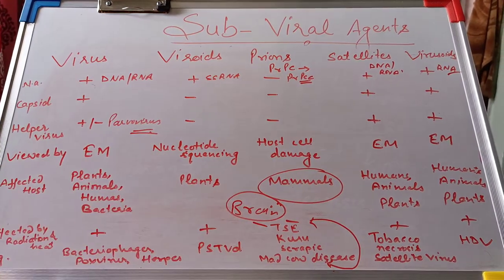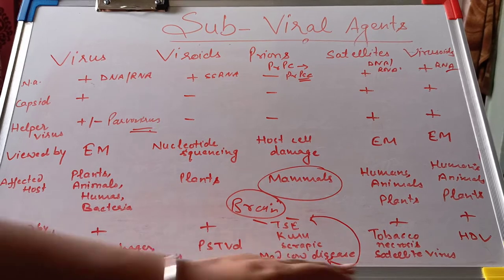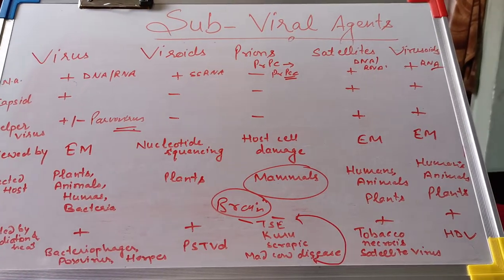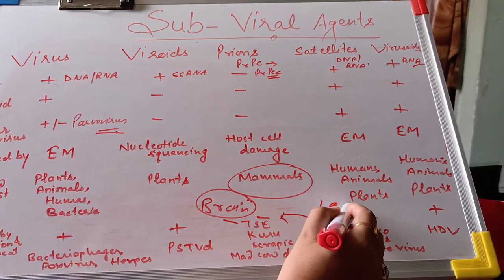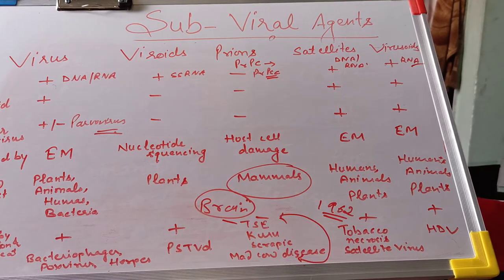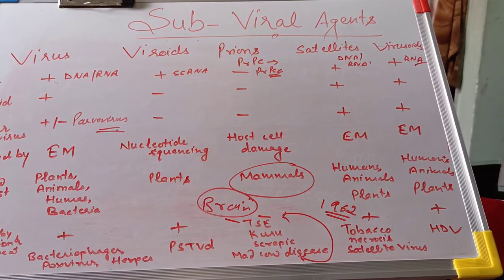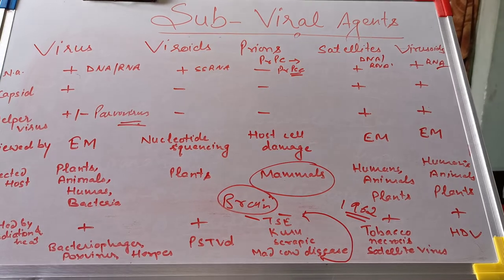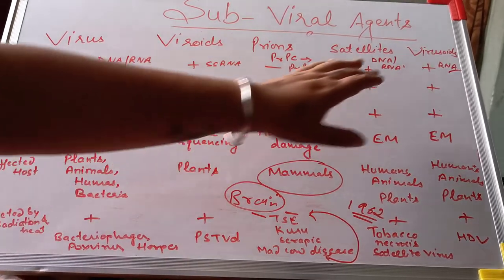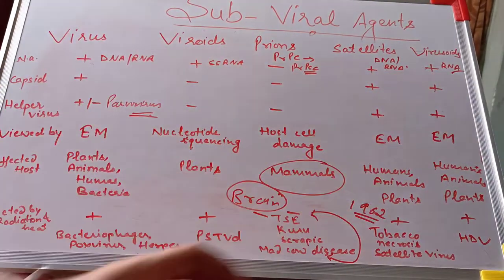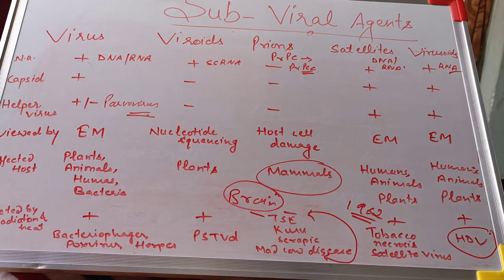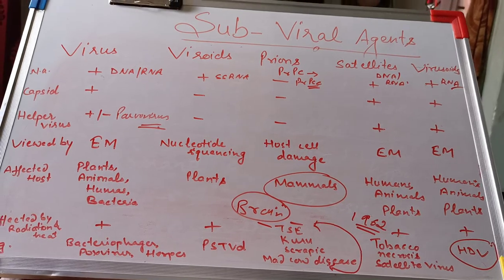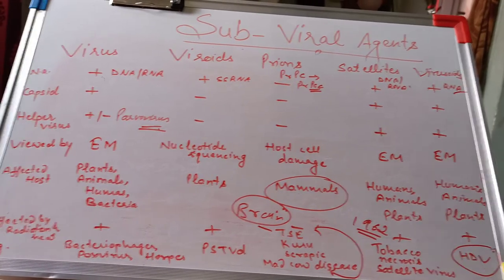Examples of satellites include the Tobacco Necrosis Satellite Virus, which was the first satellite virus identified in 1962. Others include Sputnik Virophage and Mavirus Virophage. For virusoids, the key example is the Human Hepatitis Delta Virus, which is classified as a virusoid and always needs a helper virus — the Hepatitis B virus — for causing infection.